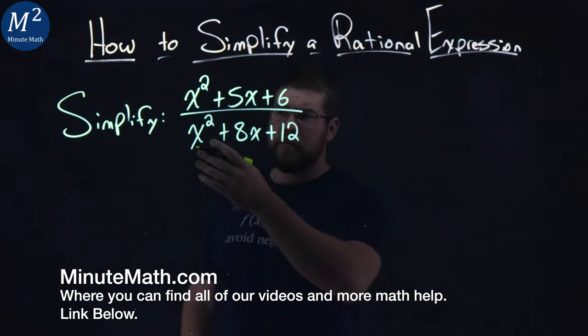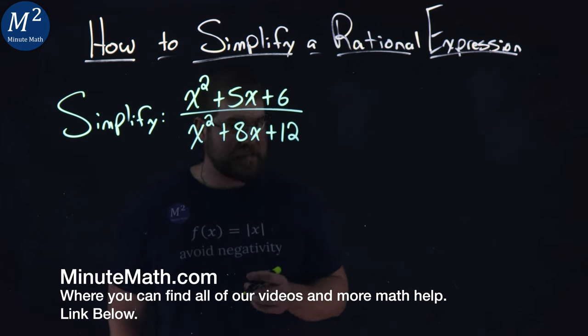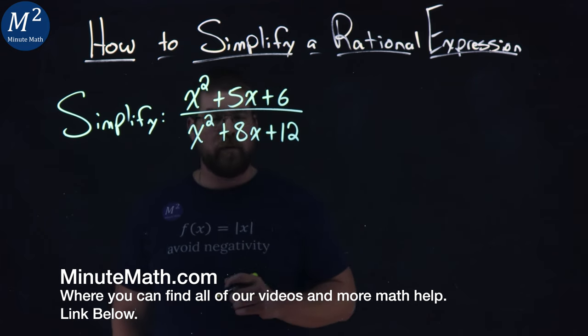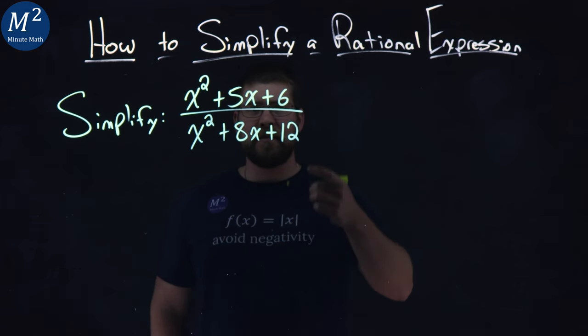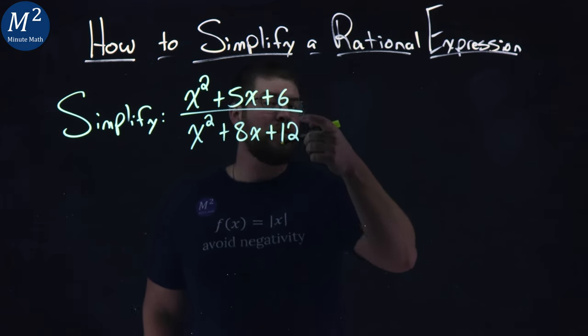We're given this problem right here. Simplify x squared plus 5x plus 6 over x squared plus 8x plus 12. A rational expression is when we have two expressions that we're dividing.